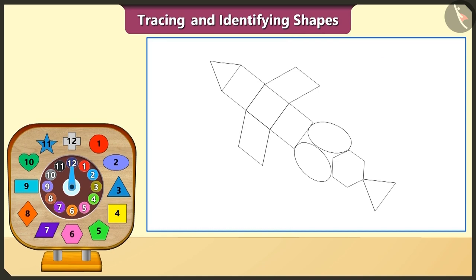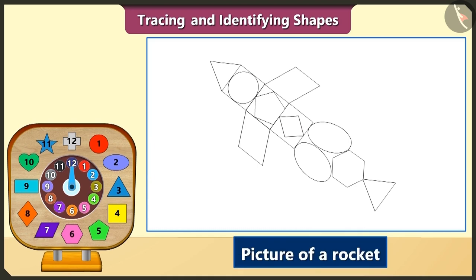Now look at these blocks. This is a circle, this is a pentagon and this is a rhombus. Now we will place these blocks in the three traced square shapes and trace them. Oh wow, this is a picture of a rocket.